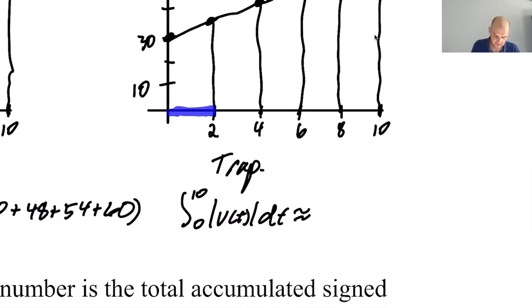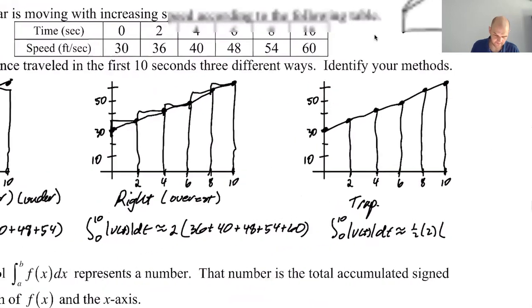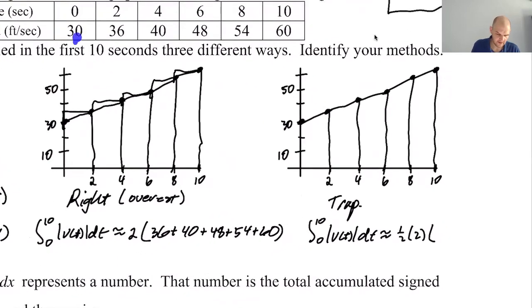All right, so the integral from zero to ten of the absolute value of v of t dt is approximately—I'm going to sort of generalize here because they all have a height of 2. I'm going to say it's one half the height and then for each trapezoid I'm going to find the sum. So I'm going to do 30 plus 36, and then 36 plus 40, and then 40 plus 48, and then 48 plus 54, and then 54 plus 60.